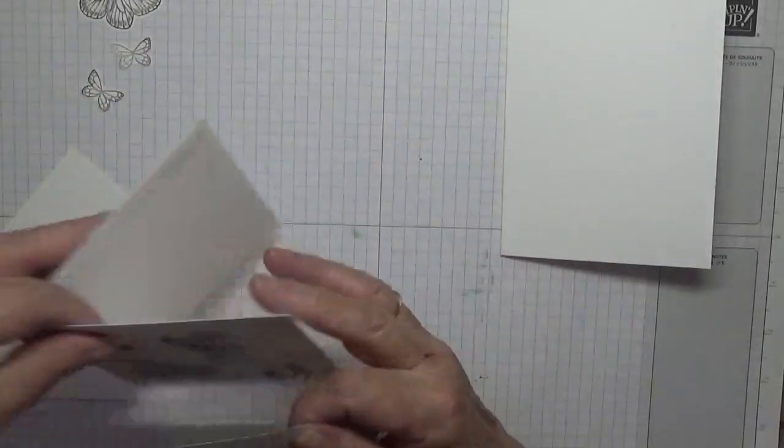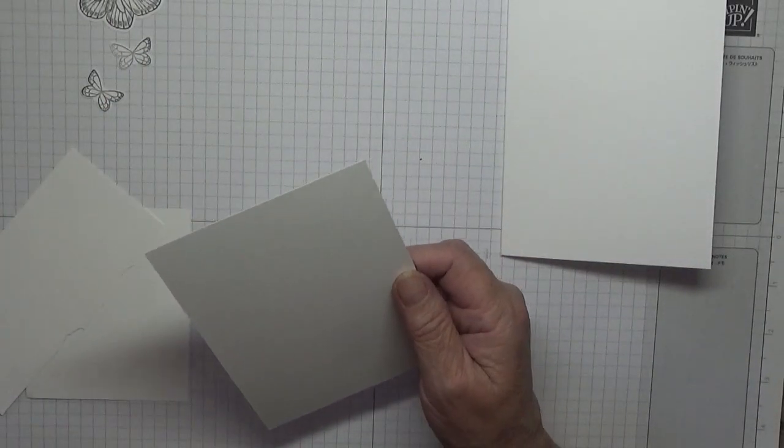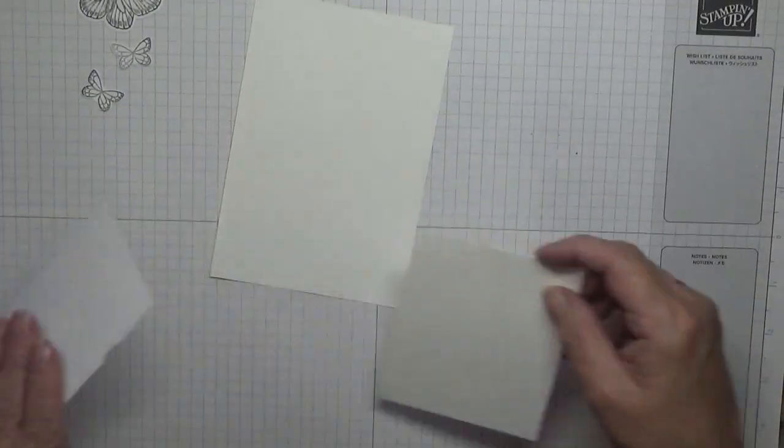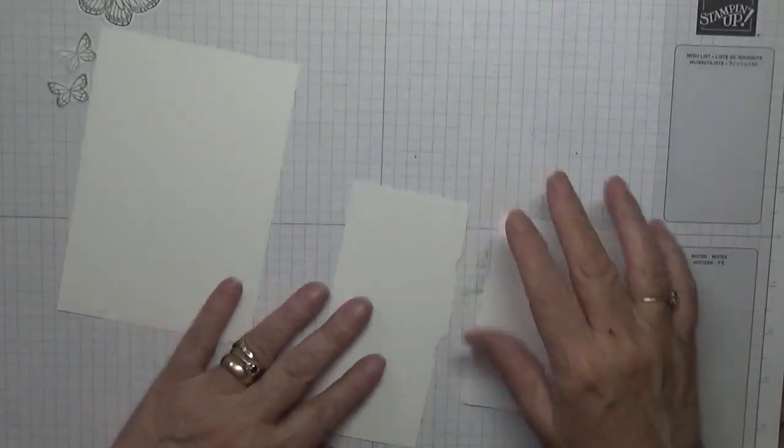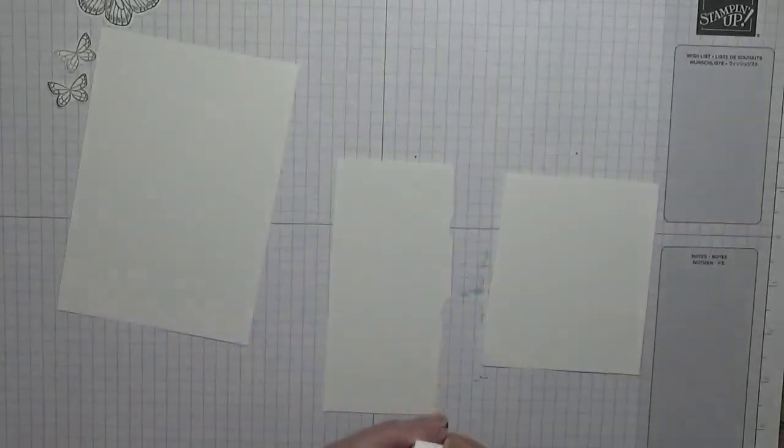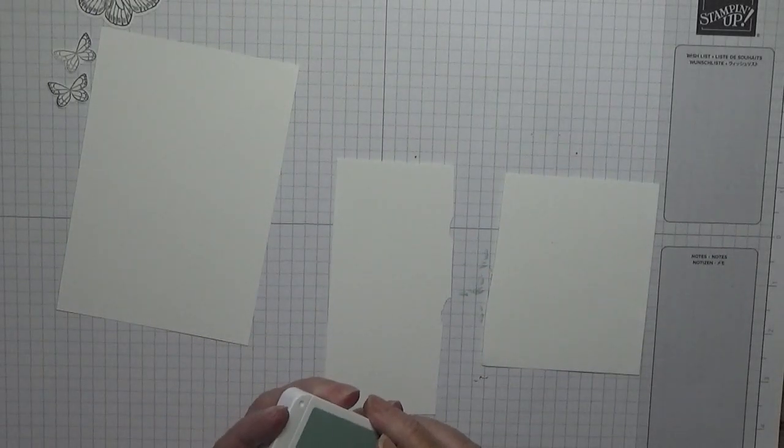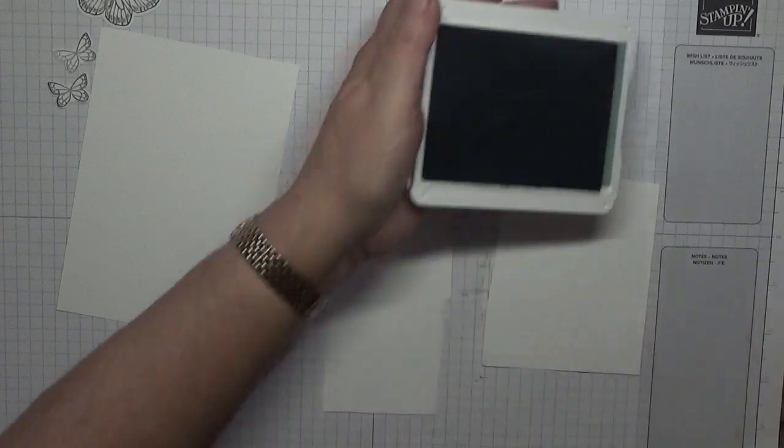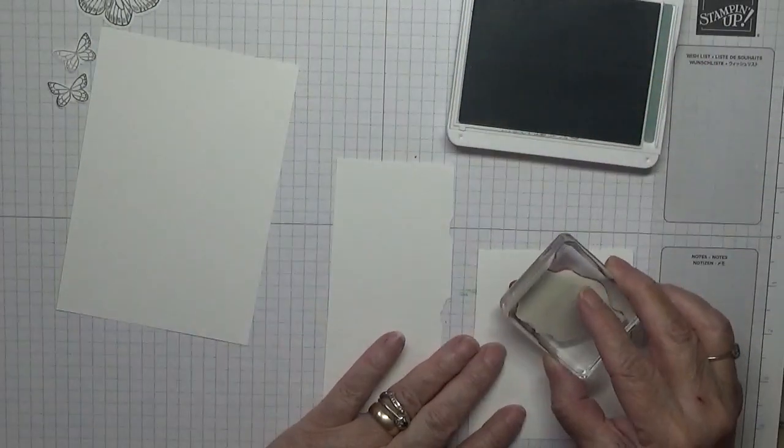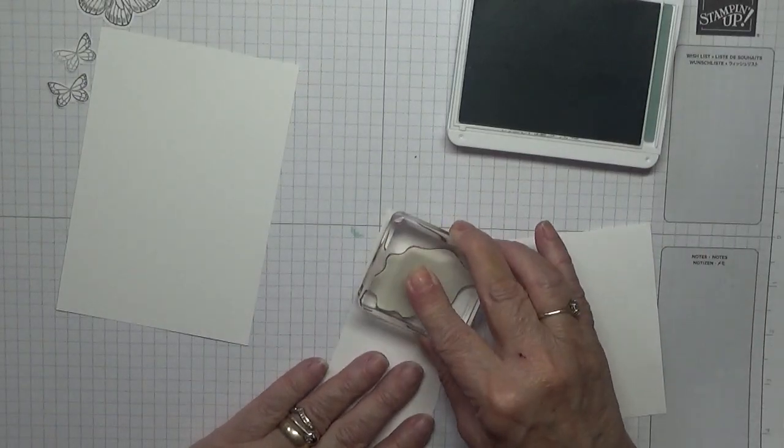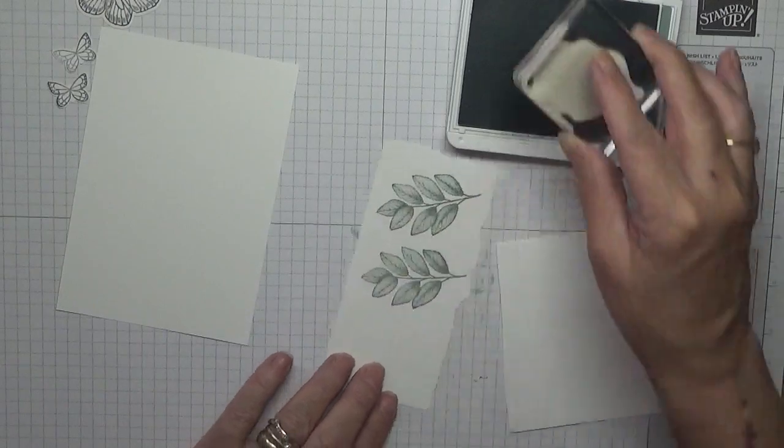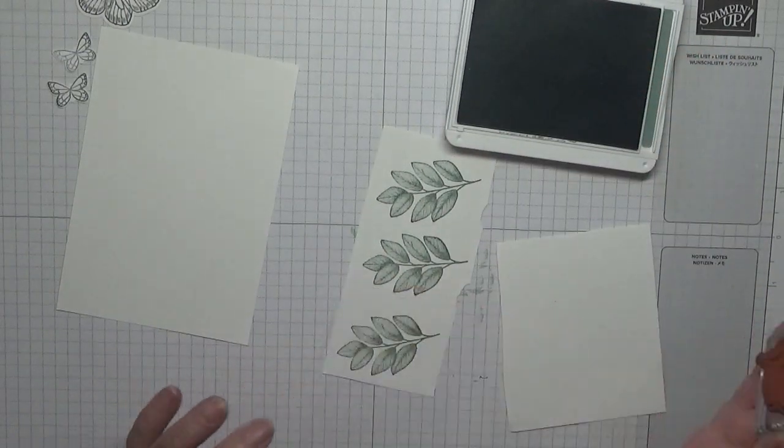So the first thing we're going to do is stamp our leaves and the sentiment. For our leaves I'm using Soft Succulents. We need three of these and we need three of these. I'm going to do the leaves on here, one, two, three.